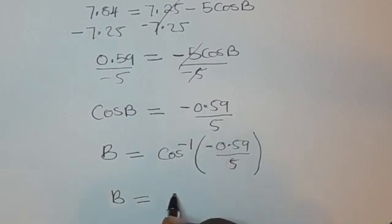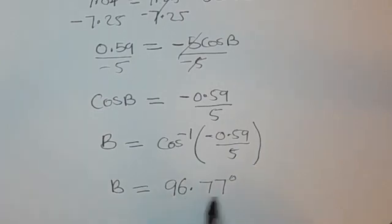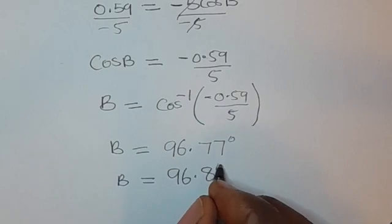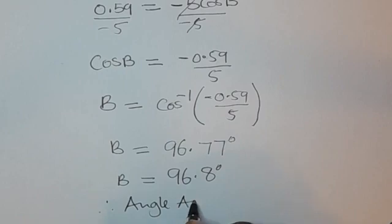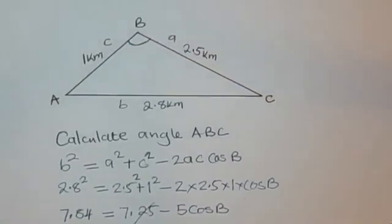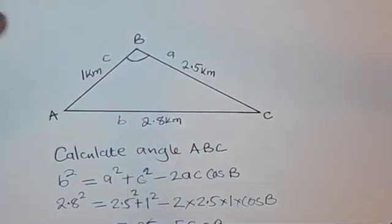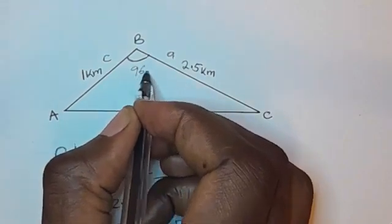On a calculator, cos inverse of that value gives 96.77 degrees. Rounding to one decimal place, B equals 96.8 degrees. Therefore angle ABC equals 96.8 degrees. This is an obtuse angle — greater than 90 degrees but less than 180 degrees — which makes sense when you look back at the triangle.